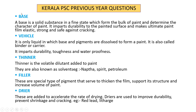The base is the principal constituent of paint — it is the body. The base consists of metallic oxides. It should be elastic and strong. Examples include white lead and red lead, which help reduce shrinkage.